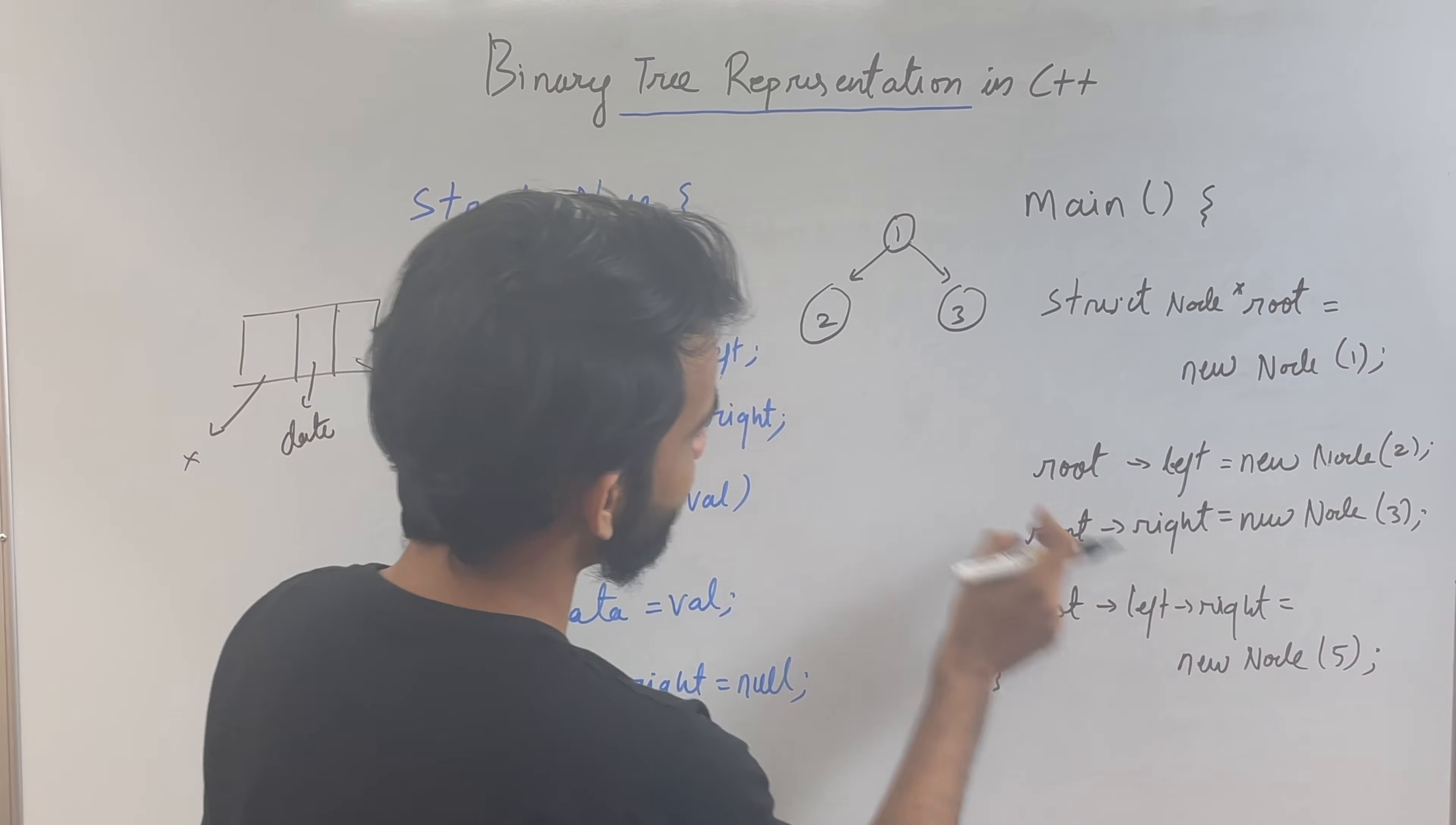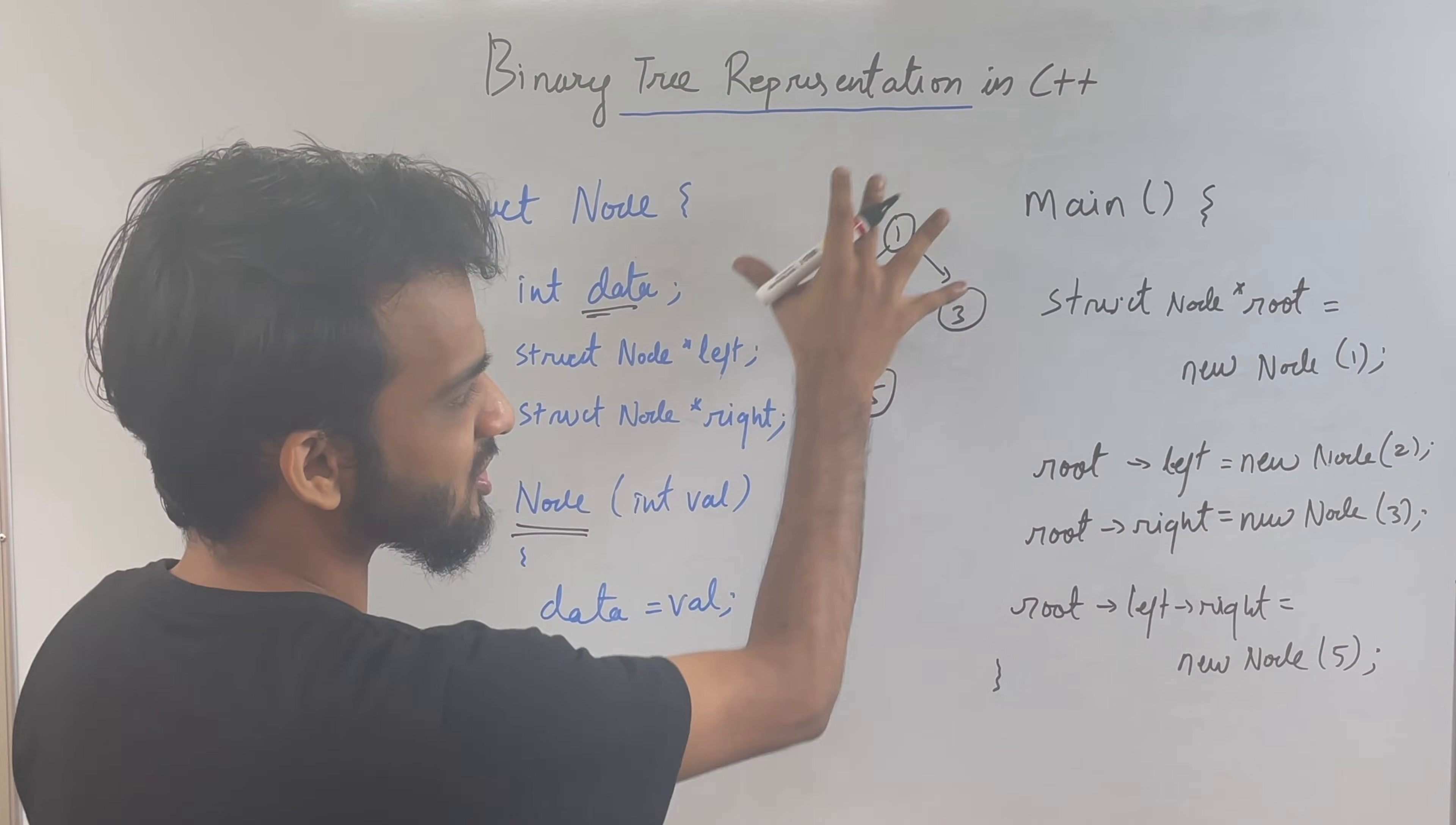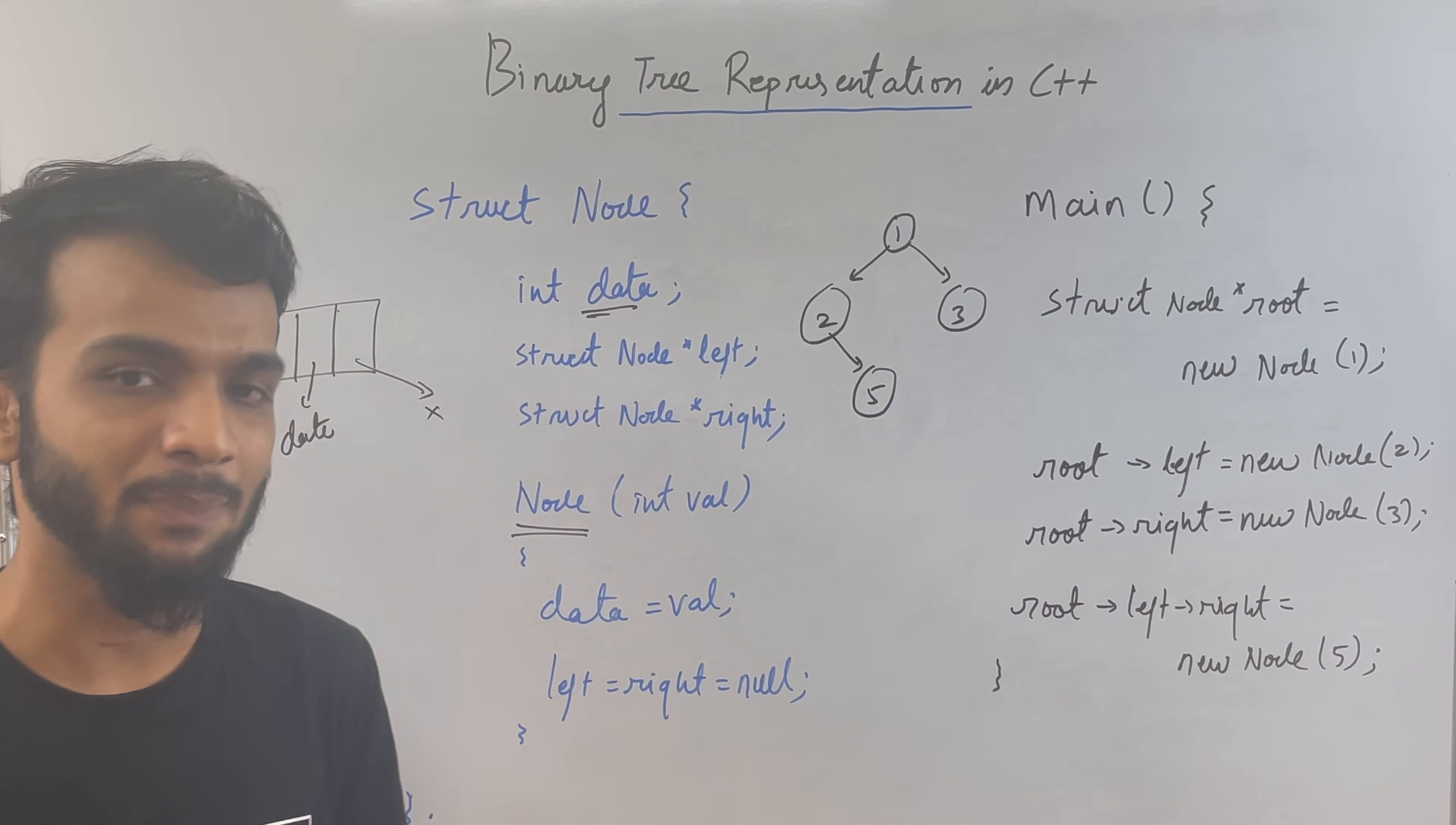Next, I'm saying root->left->right, root's left, root's right, new node of five. New node of five. So in this way, I can create this tree. And if you want to create a bigger tree, you can definitely use these kind of syntaxes and you can definitely do it. So this is how you will represent a binary tree in C++.